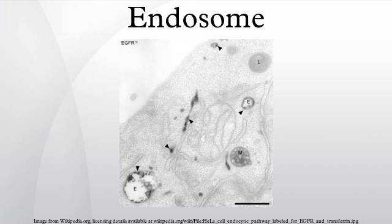Once endocytic vesicles have uncoated, they fuse with early endosomes. Early endosomes then mature into late endosomes before fusing with lysosomes. Early endosomes mature in several ways to form late endosomes. They become increasingly acidic mainly through the activity of the V-ATPase. Many molecules that are recycled are removed by concentration in the tubular regions of early endosomes. Loss of these tubules to recycling pathways means that late endosomes mostly lack tubules. They also increase in size due to the homotypic fusion of early endosomes into larger vesicles.